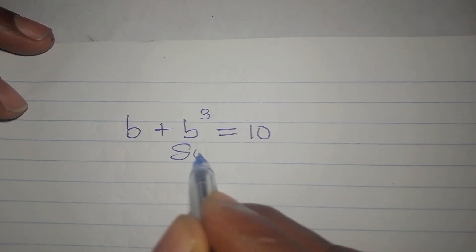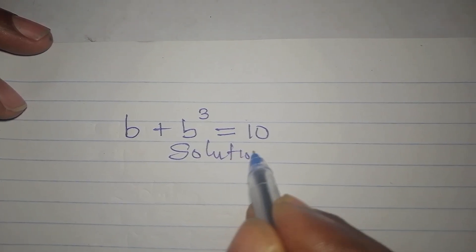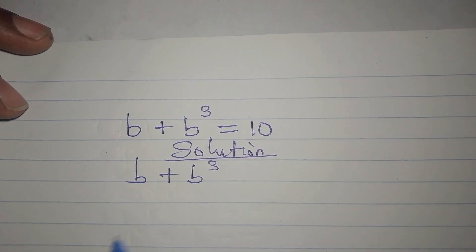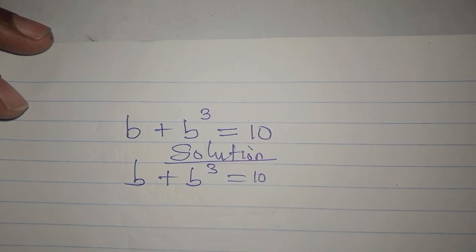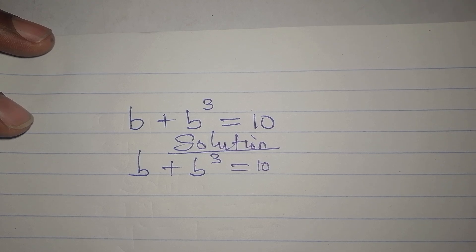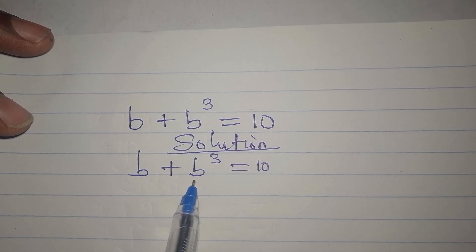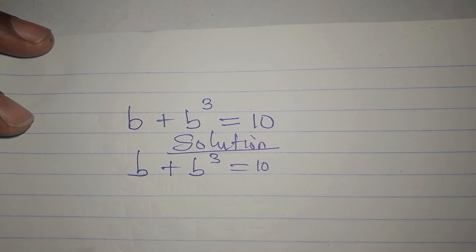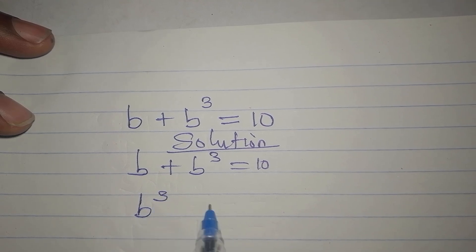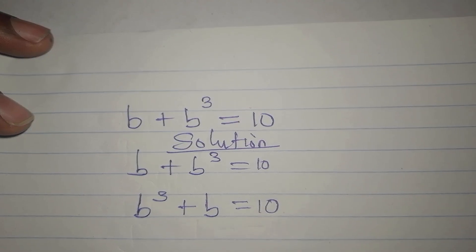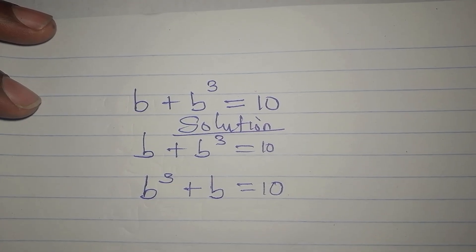Hi everyone, let's solve this right away. We have b + b³ = 10. How do I deal with this? The first step is to rearrange. I want to write b³ first, knowing that it has the bigger power, so I'm going to write b³ + b = 10.